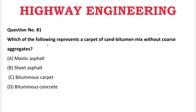Question: Which of the following represents a carpet of sand bitumen mix without coarse aggregate? Option A: mastic asphalt, Option B: sheet asphalt, Option C: bituminous carpet, Option D: bituminous concrete. The correct answer is Option B, sheet asphalt.